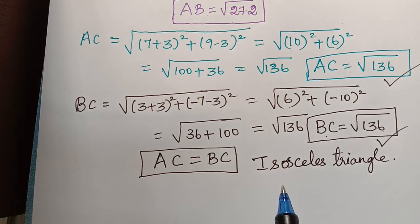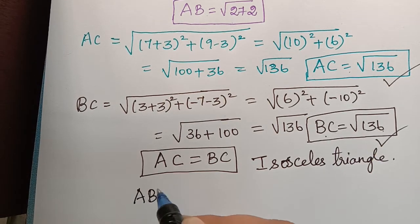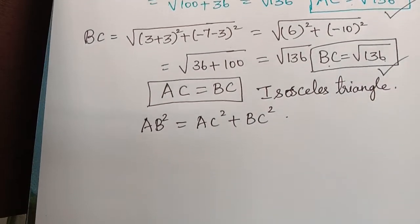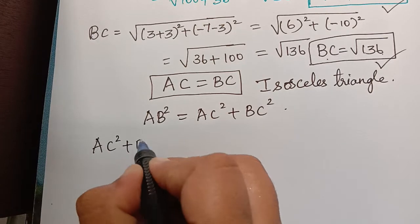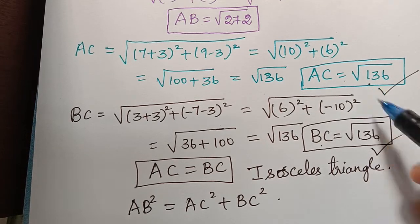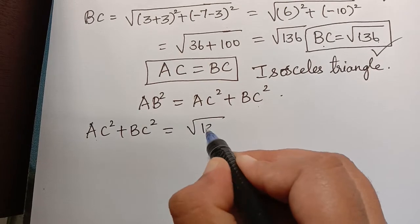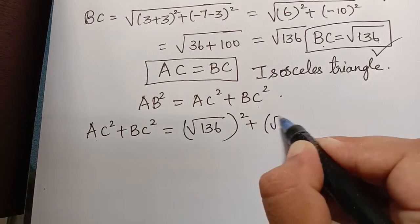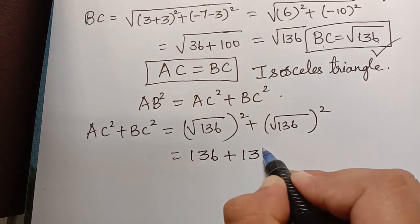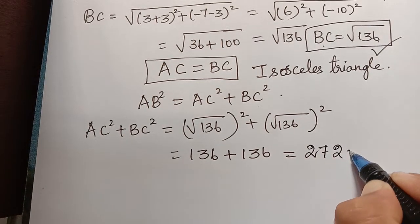Next we have to prove that it is a right angle triangle, for which we need to prove that AB² = AC² + BC². Let us consider the right-hand side: AC² + BC² = (√136)² + (√136)² = 136 + 136 = 272 units. Therefore AC² + BC² = 272.